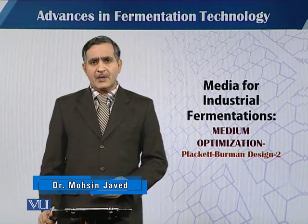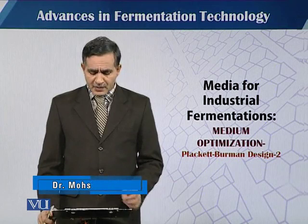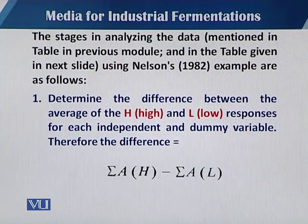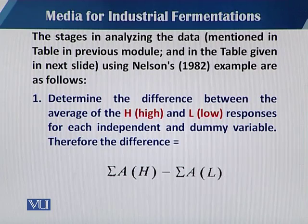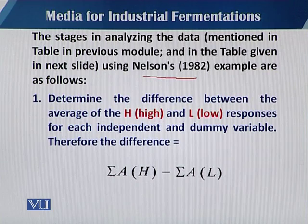In continuity of the previous module about Plackett-Burman design, we analyze the stages in the data using Nelson's 1982 example. We have to determine the difference between the average of high and low responses for each independent and dummy variable.